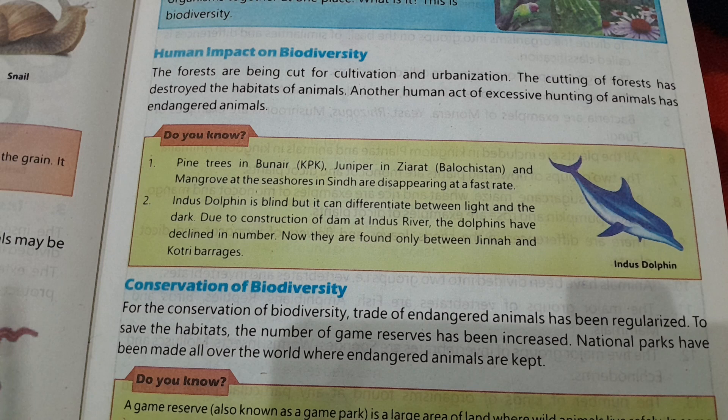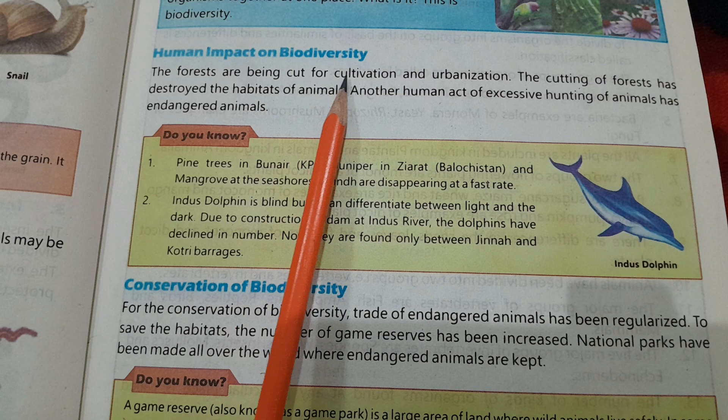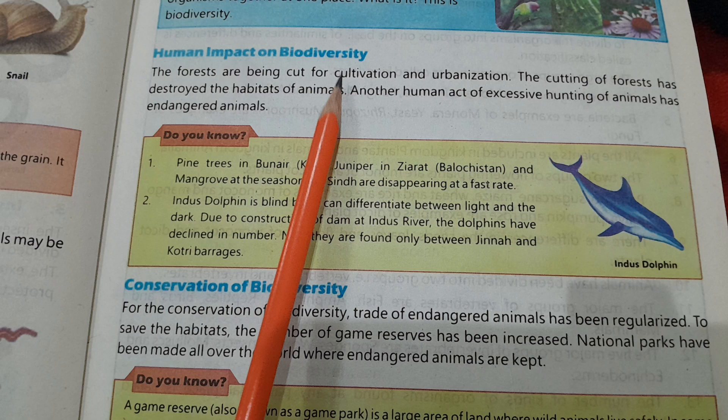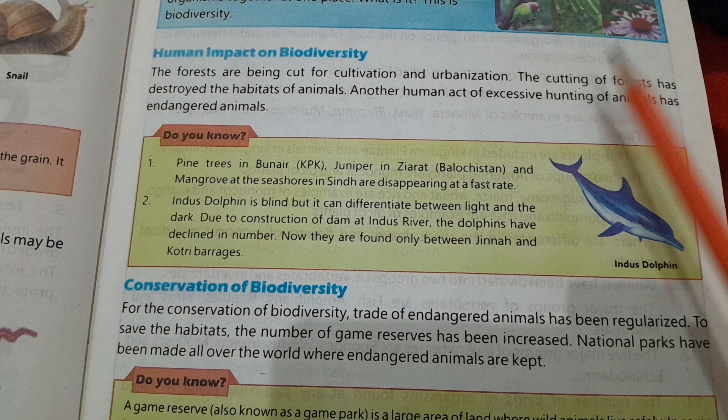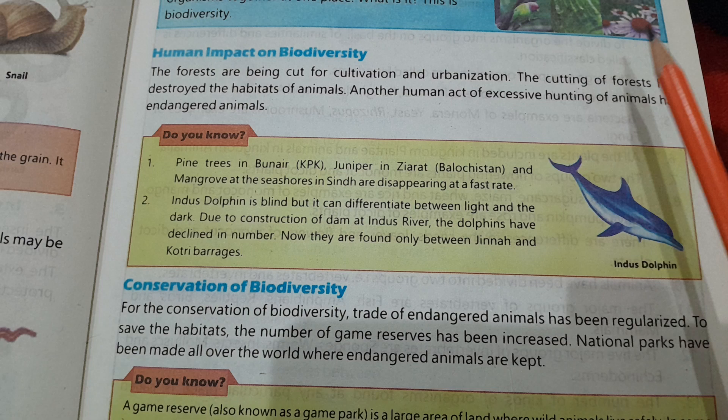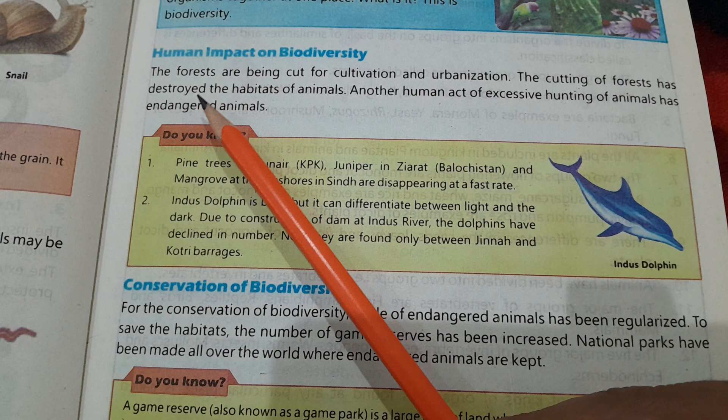Human impact on biodiversity — the forests are being cut for cultivation and urbanization. Urbanization سے مراد یہ ہے کہ جنگلوں کو کاٹ کر شہر آباد کیے جاتے ہیں۔ The cutting of forests has destroyed the habitat of animals — جب ہم جنگلات کاٹتے ہیں تو جانوروں کی پناہ گاہیں تباہ ہو جاتی ہیں۔